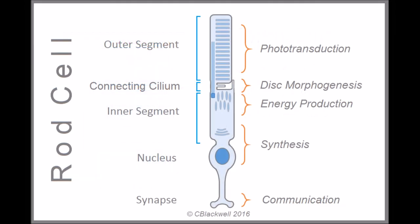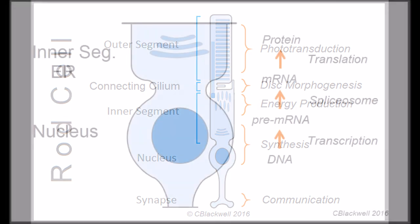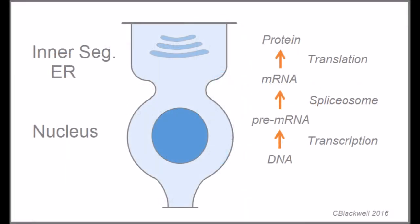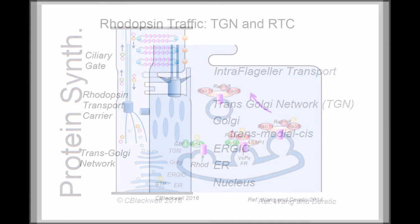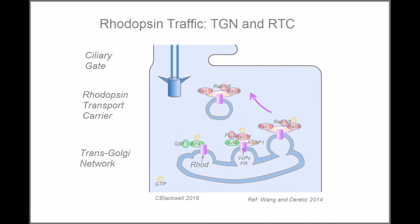But the outer segment has no ribosomes. That means no means of producing those molecules. Their production starts in the nucleus with transcription from DNA to pre-mRNA and spliceosome editing for mature mRNA. Translation occurs via ribosomes in the endoplasmic reticulum. Further protein modifications occur through the Golgi apparatus to label the proteins they are targeted for their appropriate final destination.